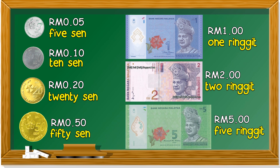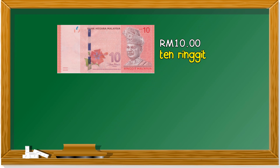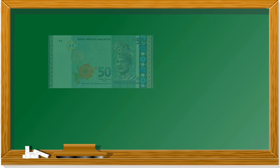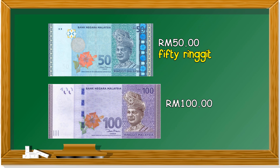10 ringgit is red. When you write 10 ringgit, you write RM 10.00. Same goes for 20 ringgit - 20 ringgit is orange in color. 50 ringgit is green. And 100 ringgit - the 100 ringgit note is purple.